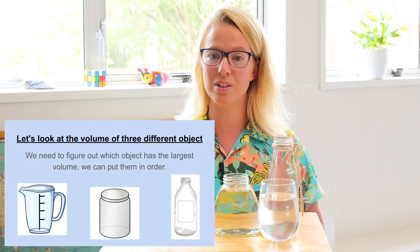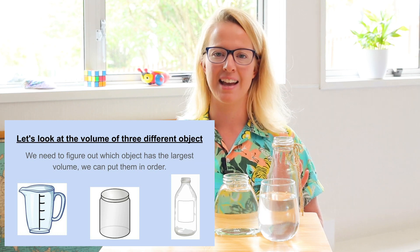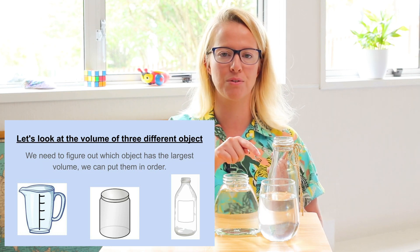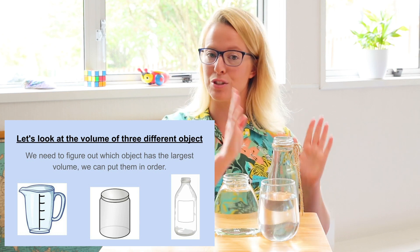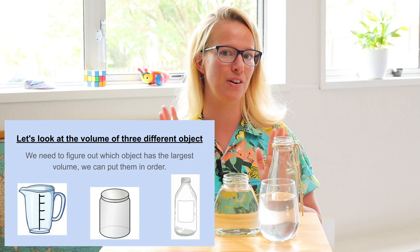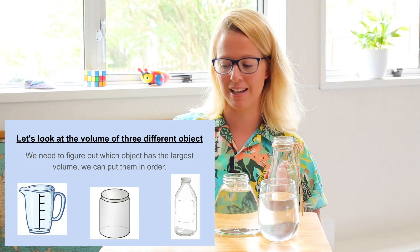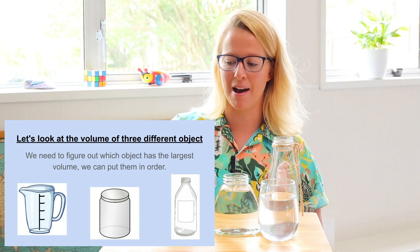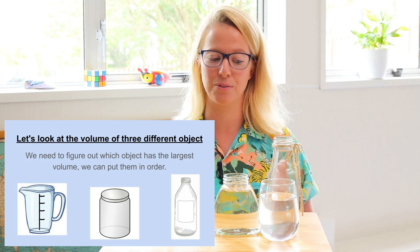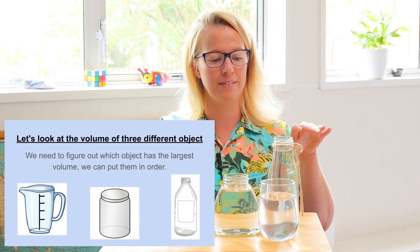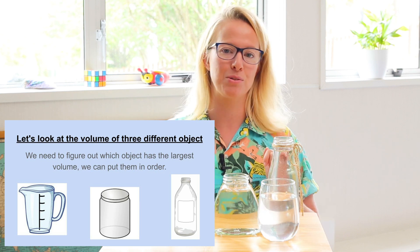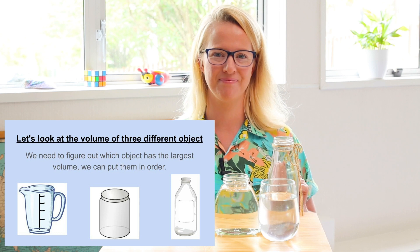I want you to have a think — you can pause the video here — and figure out which one of these three will have the largest volume, then order them from smallest to largest. We're going to check by pouring the water into a jar and putting a mark at where the water comes up to. They might surprise us! And I'm not going to waste this water — I'll use it later to wash my dishes.